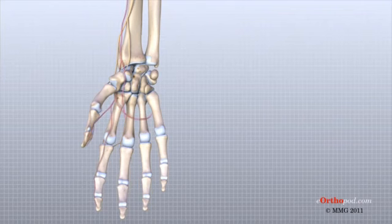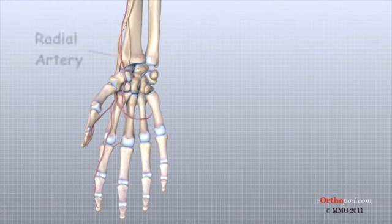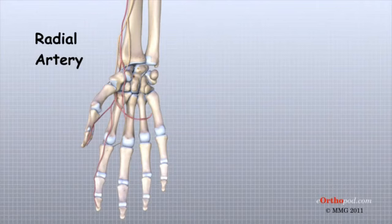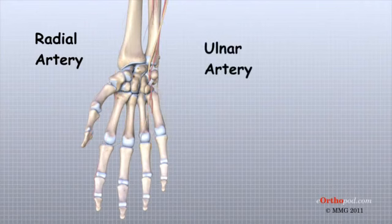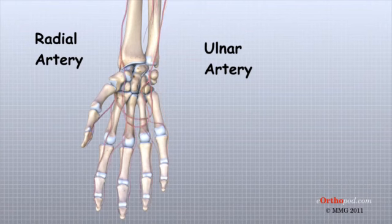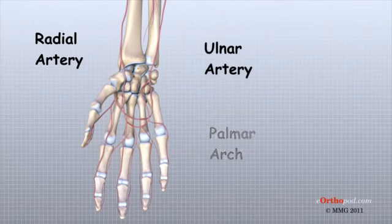Traveling along with the nerves are the large vessels that supply the hand with blood. The largest artery is the radial artery, which travels across the front of the wrist closest to the thumb — this is where the pulse is taken in the wrist. The ulnar artery runs next to the ulnar nerve through Guyon's Canal. The ulnar and radial arteries arch together within the palm of the hand, supplying the front of the hand, fingers, and thumb. Other arteries travel across the back of the wrist to supply the back of the hand, fingers, and thumb.